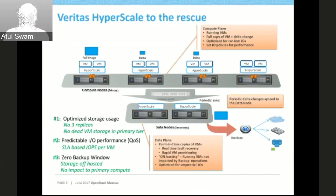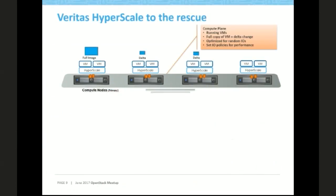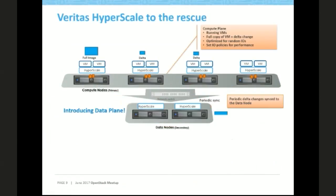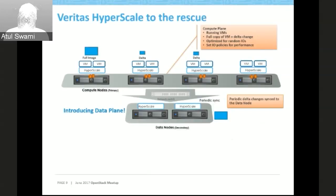What we do is put only the delta on the other computes. As and when the application makes I/O, we redirect the delta to other computes depending on the flavor — similar to VM large and VM small flavors in OpenStack, we have created our own flavors. Only the delta is transferred to the other computes. If this node goes down, I/Os can be served from one of the two deltas. If even a second node goes down, I/Os can be served from the remaining delta. So we can tolerate two simultaneous failures.